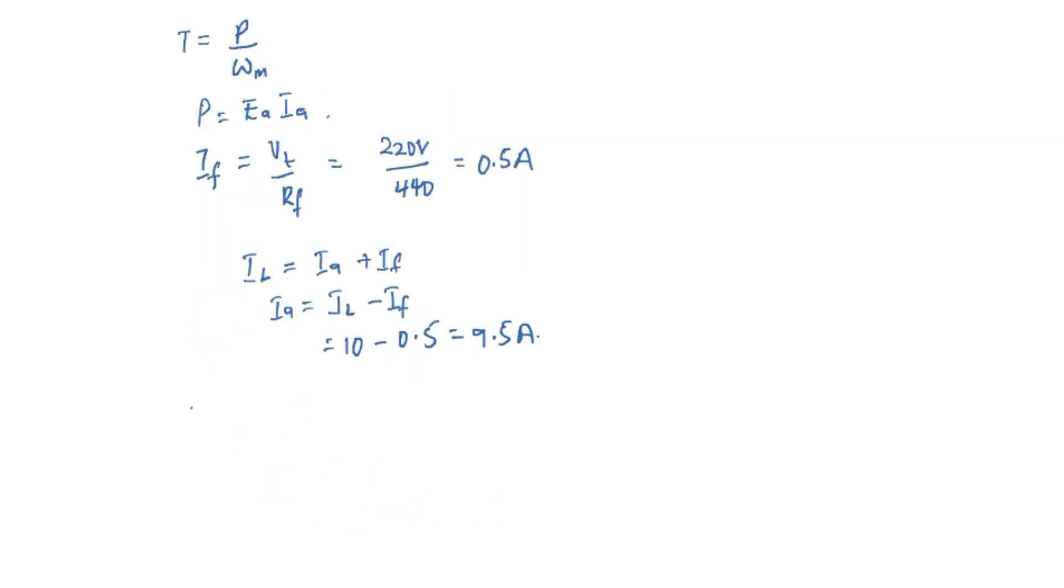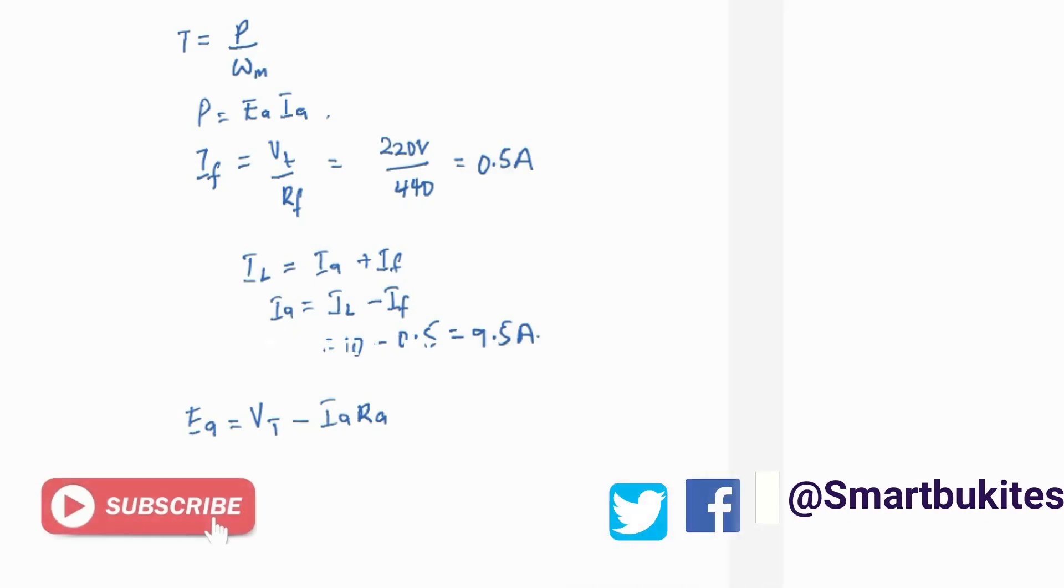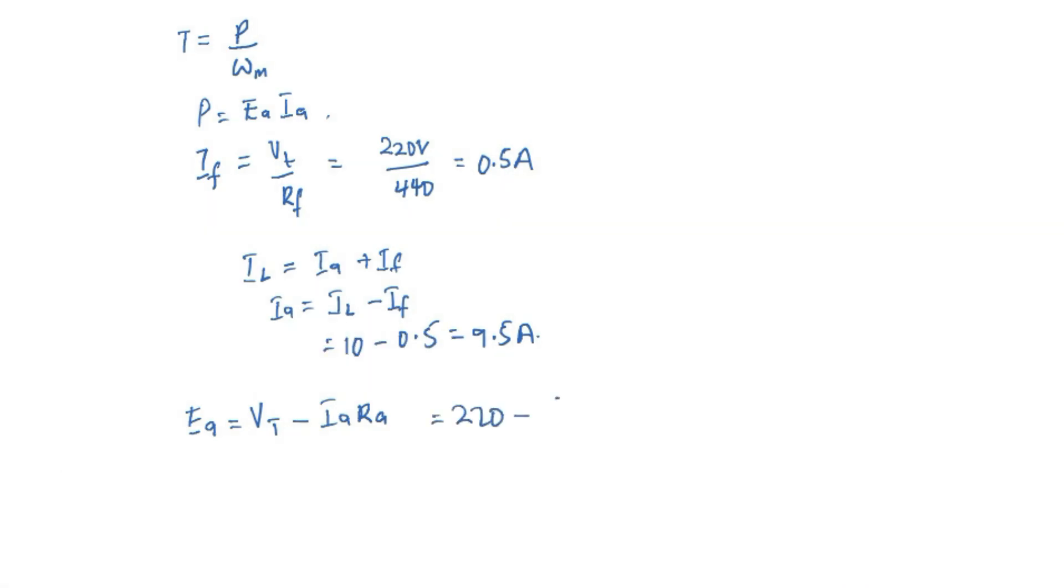IA is IL minus IF, which is 9.5 ampere. So the voltage of the motor, you know, is VT minus IA times Ra, the terminal voltage minus the drop across the armature. So we have 220 minus 9.5 multiplied by 0.2, the armature resistance, and this is going to give us 218 volts.